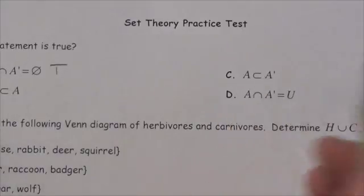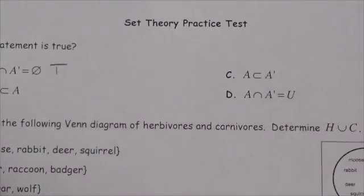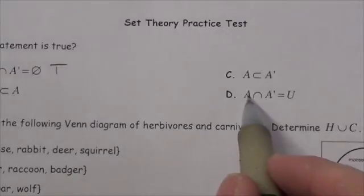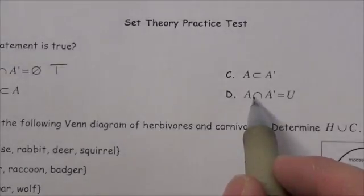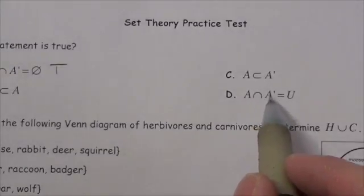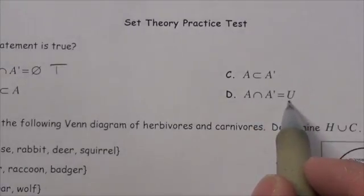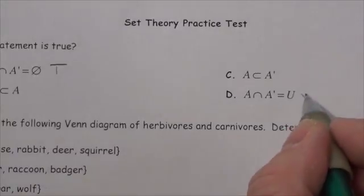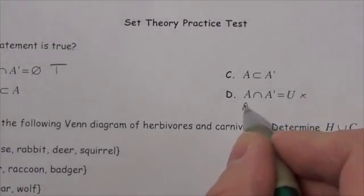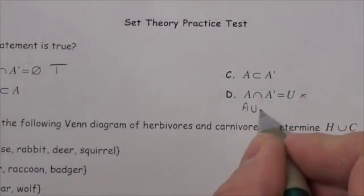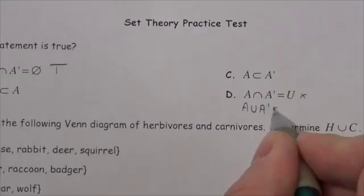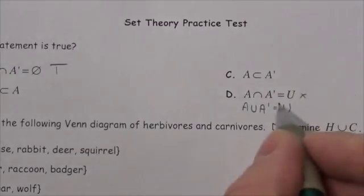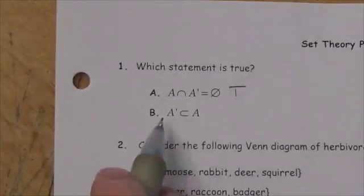Is A a subset of A'? No, for the exact same reason. And this one asks: is A ∩ A' the universal set? No — if it were A ∪ A', that would be the universal set. So A ∩ A' = ∅ is the only true statement.